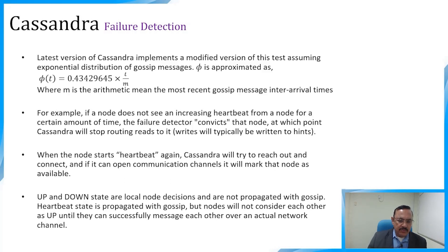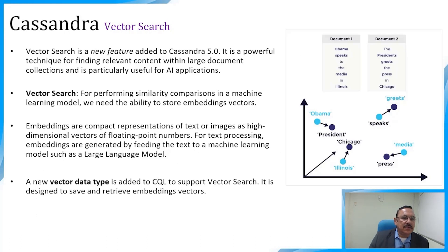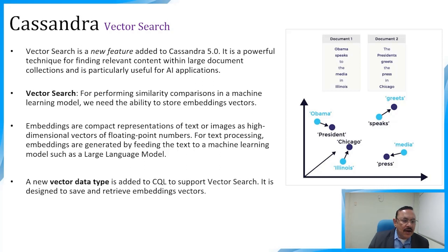Vector search is a new feature added in Cassandra 5.0. It is a powerful technique for finding relevant content within large document collections, particularly useful for AI applications. Vector search performs similarity comparisons using machine learning model embeddings — compact representations of text or images as high-dimensional vectors of floating-point numbers. A new vector data type has been added to CQL to support storing and retrieving embedding vectors.